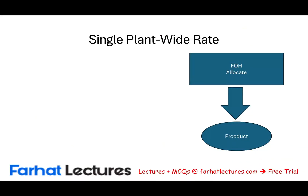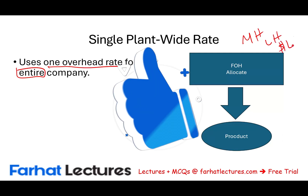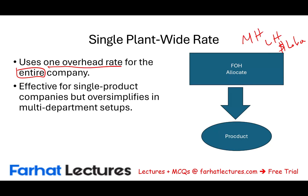The first thing we want to review is the single plant-wide rate. When we first learn about manufacturing overhead, we assume we are using one single rate for the entire company — for example, machine hours, labor hours, or dollar labor as the plant-wide rate. We also talked about activity-based costing, where we use multiple rates based on the activity. But the single plant-wide rate is simple — it's designed for single-product companies.